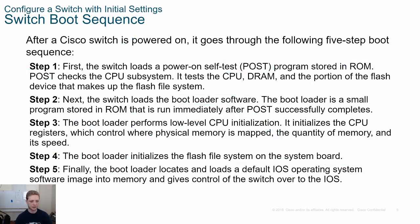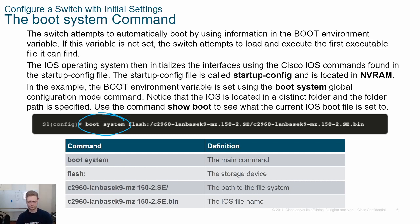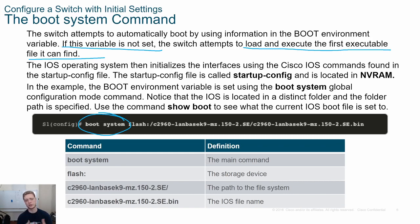Once the IOS image loads, it's actually going to go into NVRAM and find a configuration file. The 'boot system' command tells the bootloader which IOS image to load first. If we don't set this variable, it attempts to load the first executable file it can find. This could be bad — if we have two different versions of IOS on the switch, it might load the wrong version, which could be a mistake.